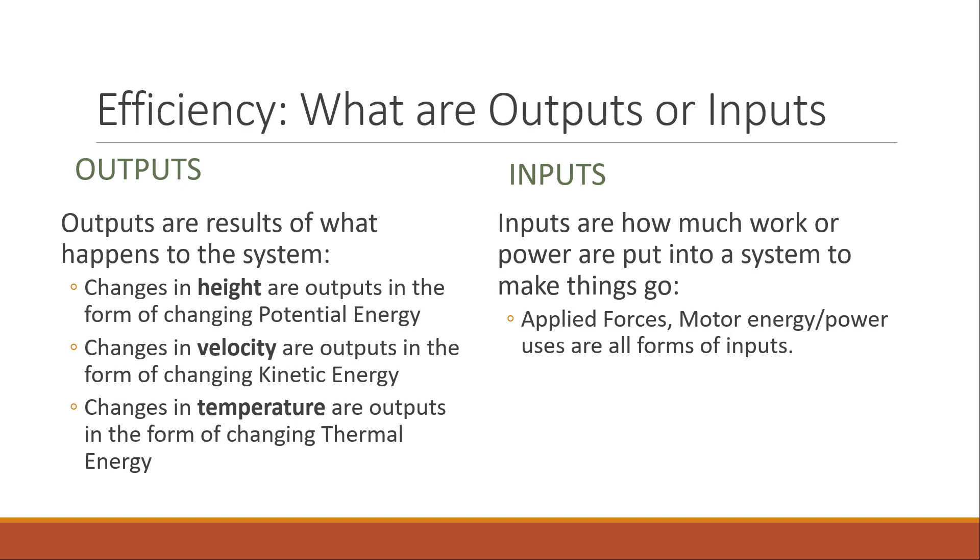Or a change in velocity is an output in the form of changing kinetic energy. Or changes in temperature are outputs in the form of changing thermal energy. Notice height, velocity, temperature, these are all things that happen to the system. These are the things that are physical, observable results. These are measurable. So the observable, measurable results are your outputs.